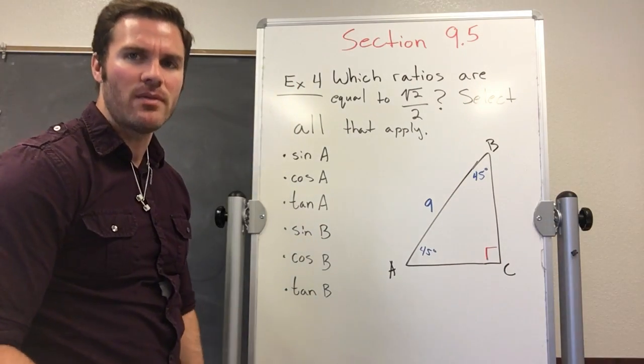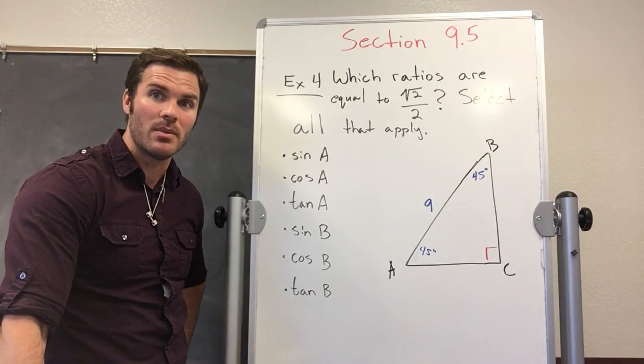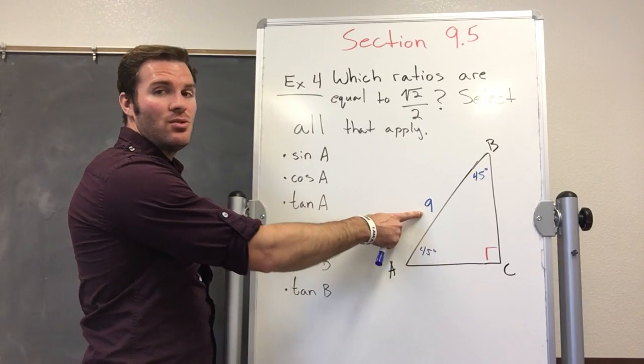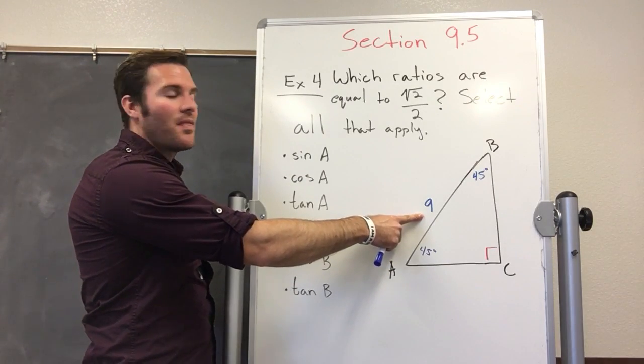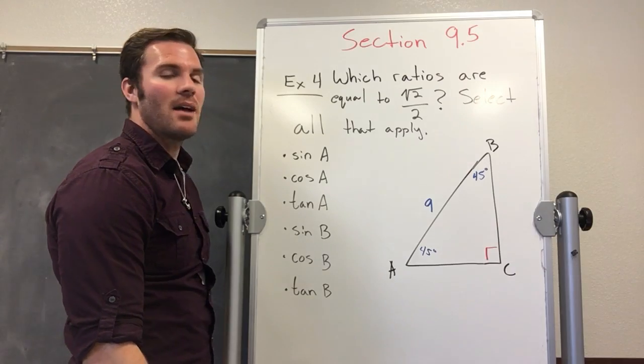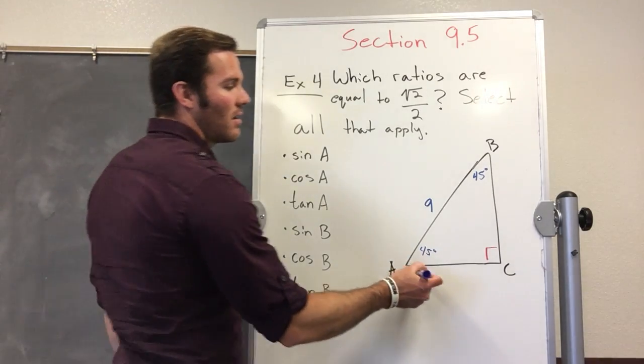So we can use the 45 degree, 45, 90 degree triangle theorem. The theorem says that the hypotenuse is the length of the sides times the square root of 2. So we can find the length of the legs.